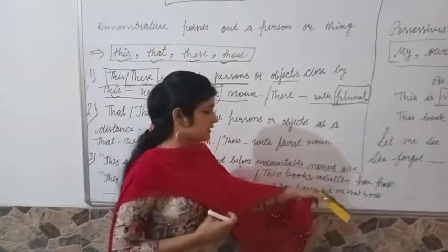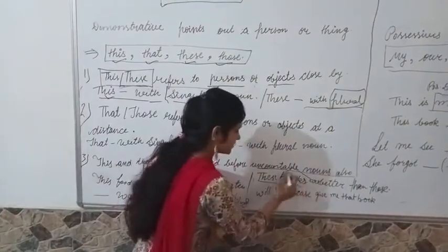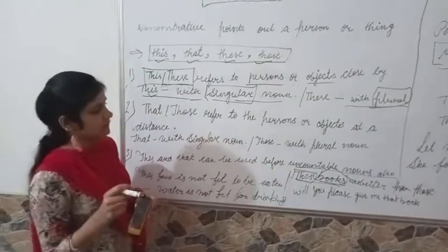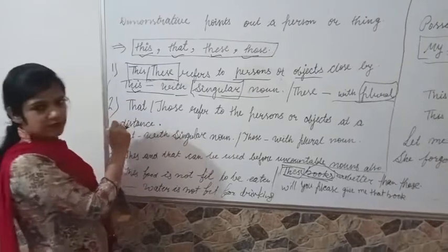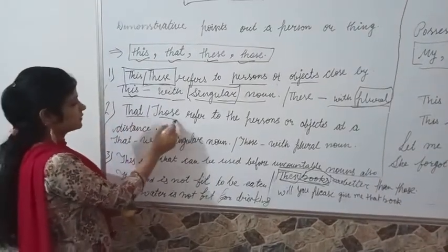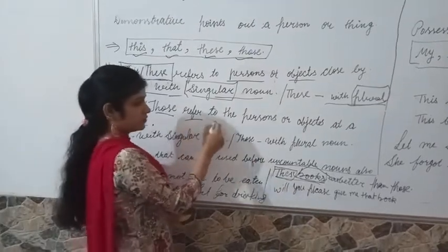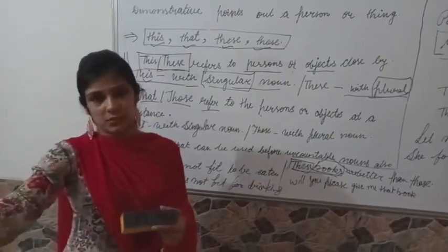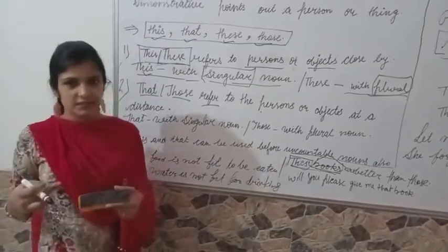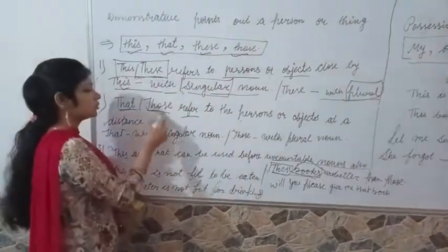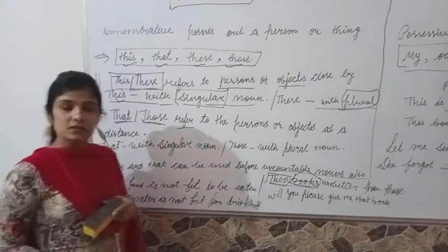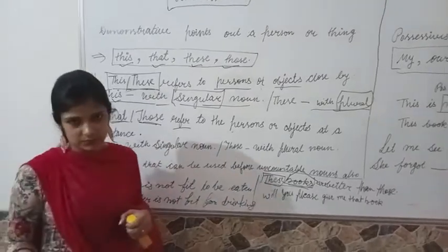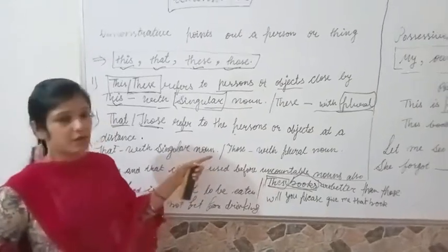These books are better than those. 'These books' — books is a plural noun. Next, we are going to look at 'that' and 'those.' These refer to persons or objects at a distance which we cannot touch. 'That' is followed by a singular noun and 'those' is followed by a plural noun.